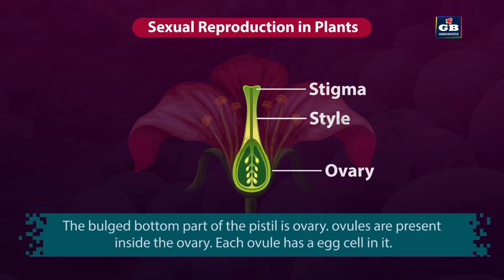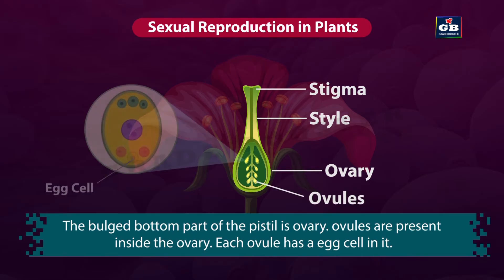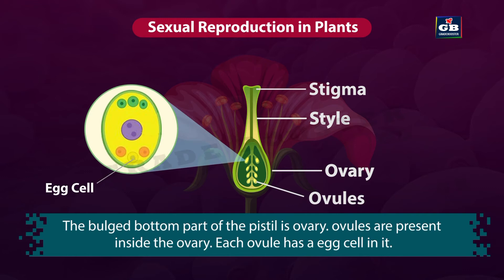The bulged bottom part of the pistil is the ovary. Ovules are present inside the ovary. Each ovule has an egg cell in it.